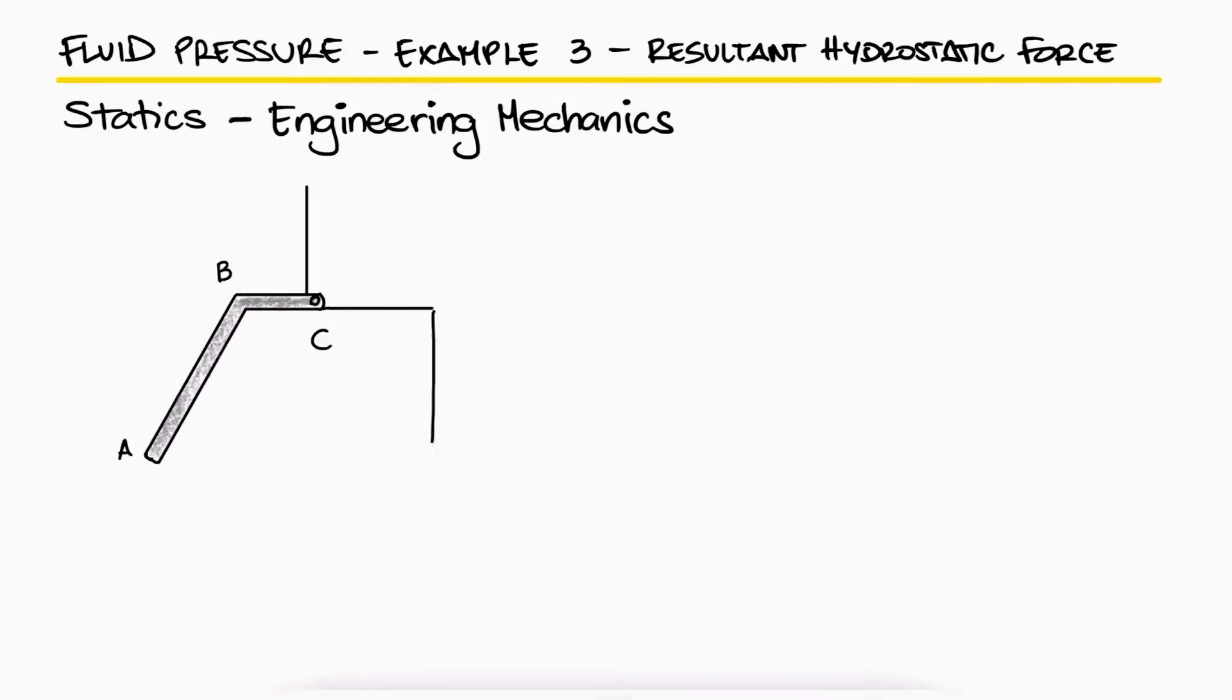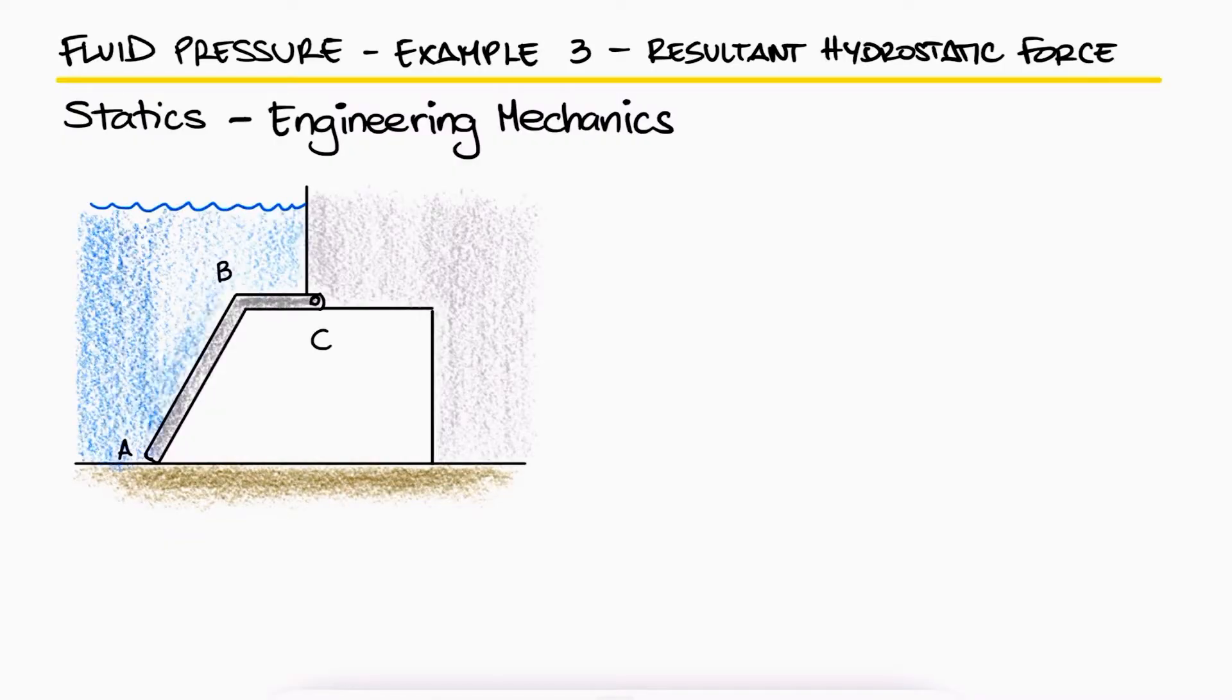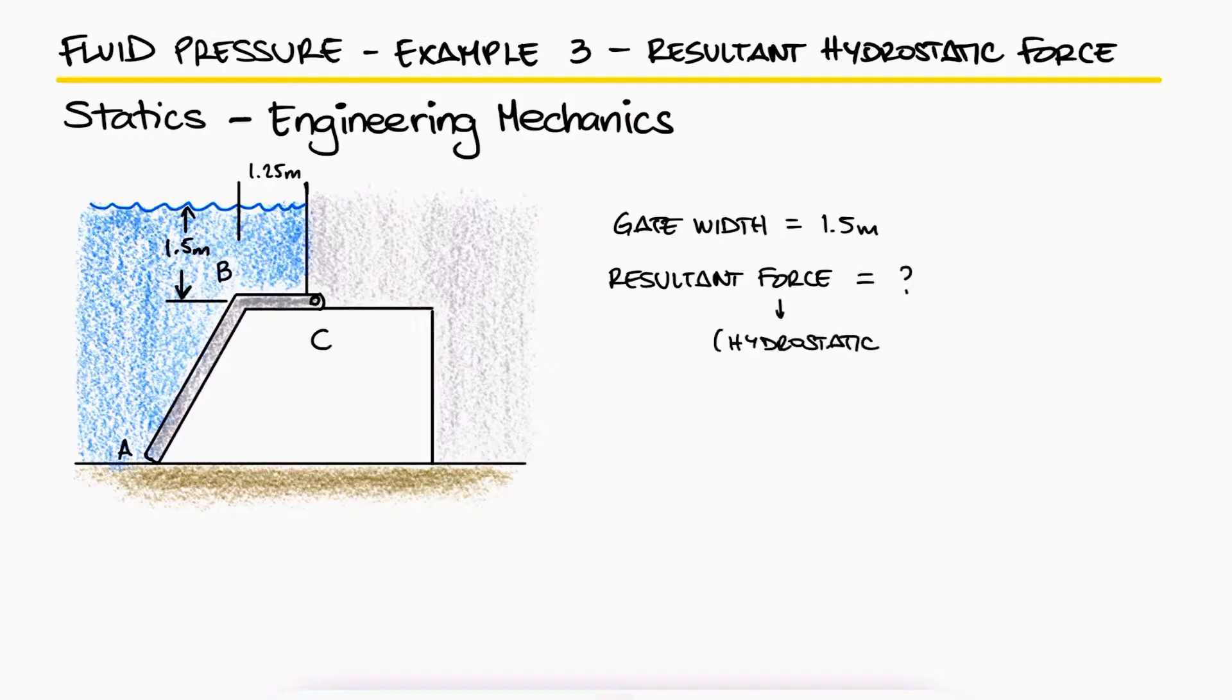What is the magnitude of the resultant force acting on the gate ABC due to the hydrostatic pressure? The gate has a width of 1.5 meters.